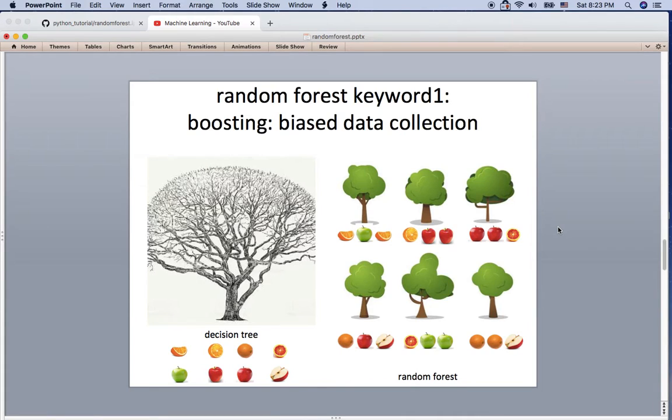And there are some keywords for the random forest. First keyword to remember is boosting. Boosting is biased data collection. For example, in the decision tree, if we have eight data like this, then the decision tree is using this eight data set as a whole as training.